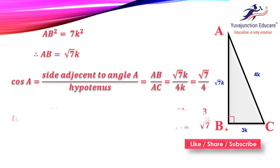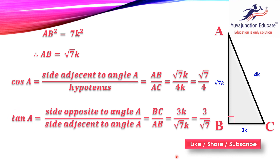Now we find tan A. Tan A is the opposite side upon the adjacent side. The side opposite to angle A is BC, and the adjacent side is AB. So tan A = BC upon AB = 3k upon √7k. The k cancels and you get tan A = 3 upon √7.